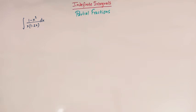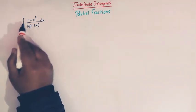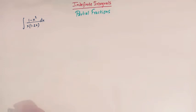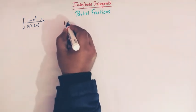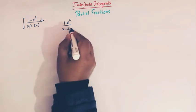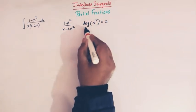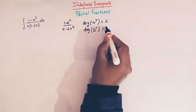To evaluate this integral, we will make use of the method of partial fractions. But before decomposing this rational function into partial fractions, we have to closely look at the integrand. We see that the degree of the numerator is equal to the degree of the denominator. We have (1 minus x squared) over (x minus 2x squared), and the degree of the numerator is 2 and the degree of the denominator is also 2.